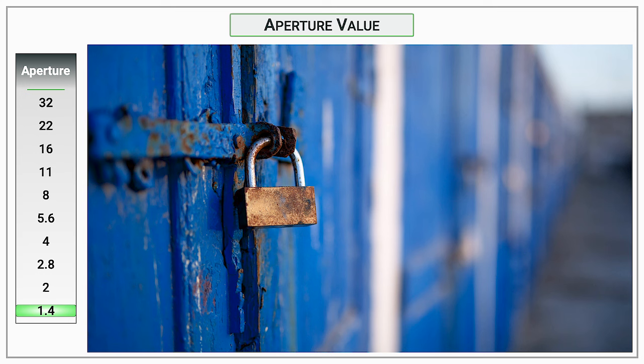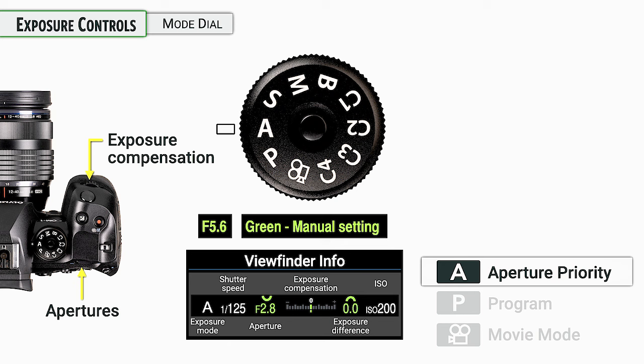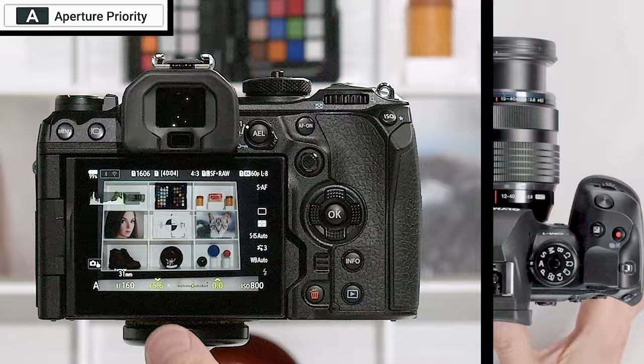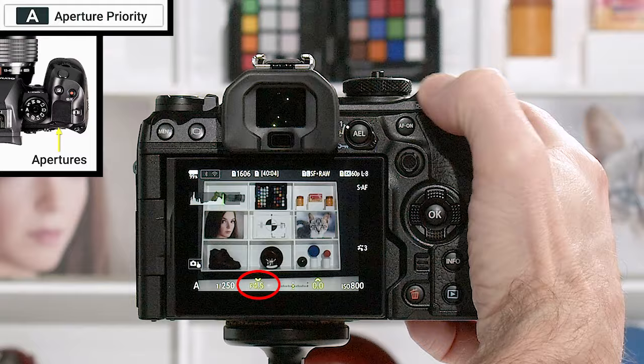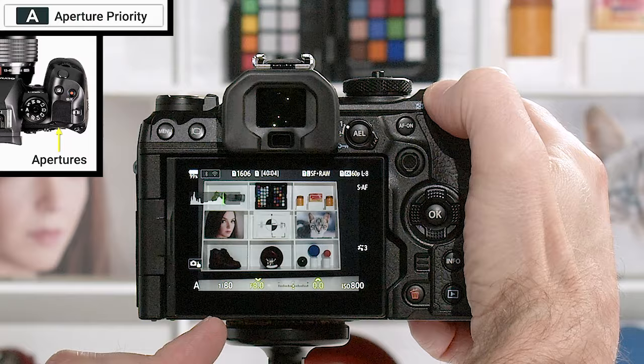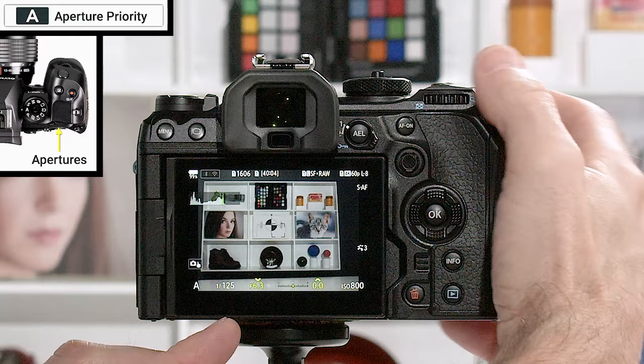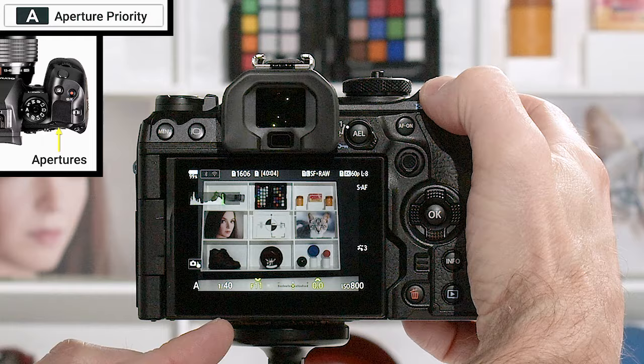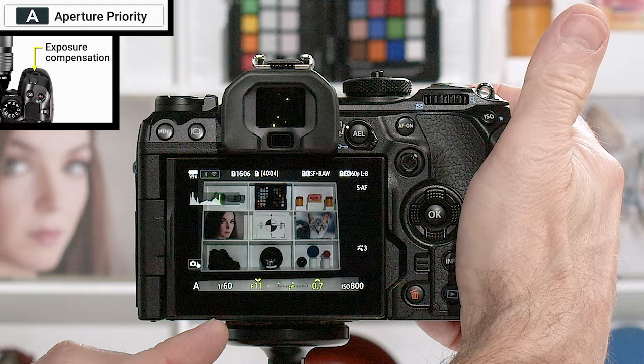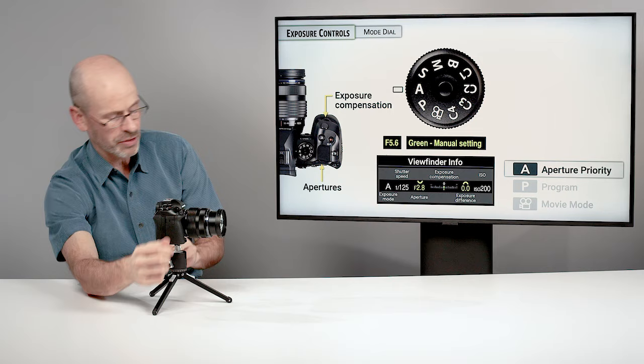When you turn the camera to aperture priority, the back dial becomes green, meaning when you change it, it'll change your aperture — and correspondingly the camera figures out your shutter speed. I often like to determine how much depth of field I need for a particular shot and check whether that gives me the correct shutter speed. If I need to make an exposure adjustment, I can do that with the front dial.